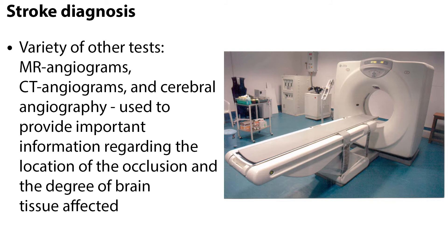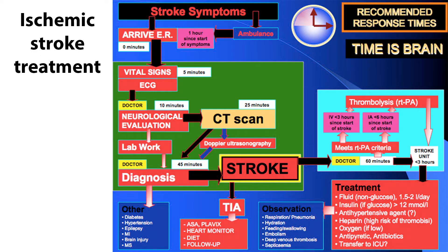A variety of other tests such as MR angiograms, CT angiograms, and cerebral angiography can be used to provide important information regarding the location of the occlusion and the degree of brain tissue affected. When a stroke is diagnosed, early and aggressive intervention is necessary to attempt reperfusion of the ischemic portions of the brain. If reperfusion can be provided within one to three hours, blood flow and metabolism in the stunned cells may be normalized. Once infarction or cell death occurs, damage is irreversible.